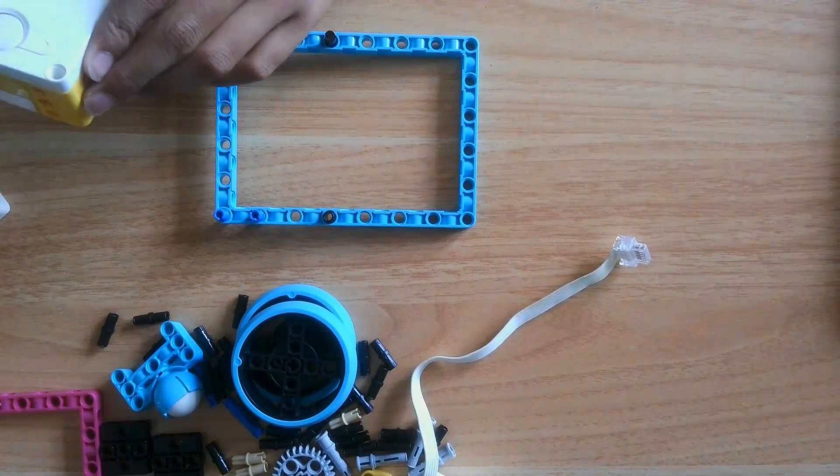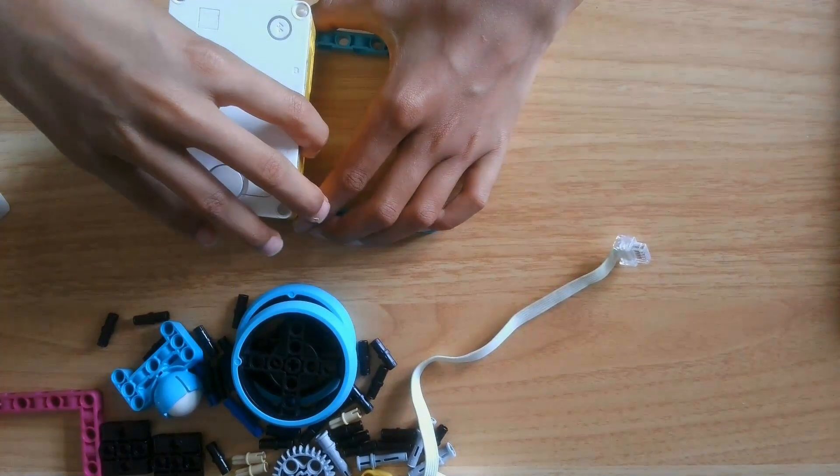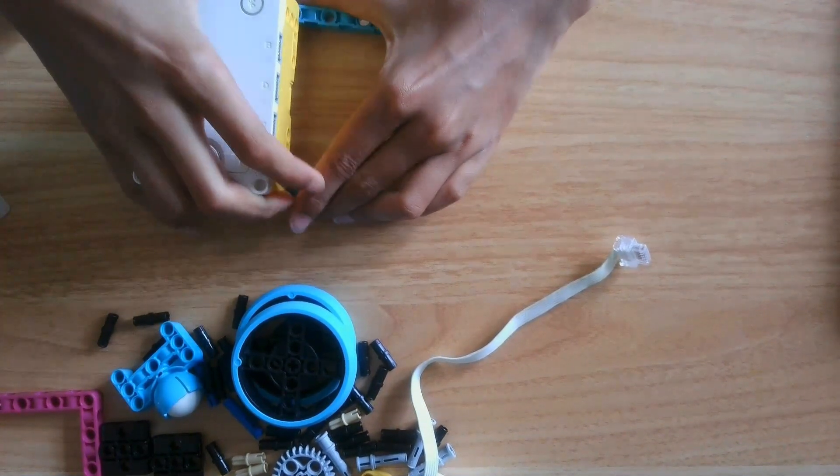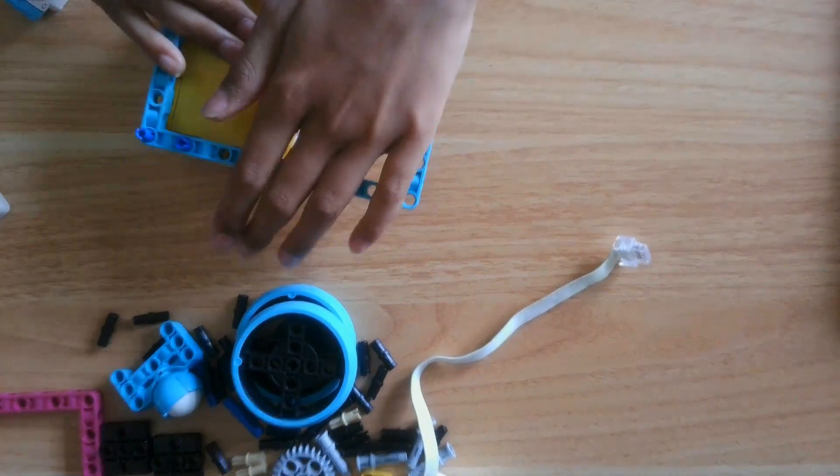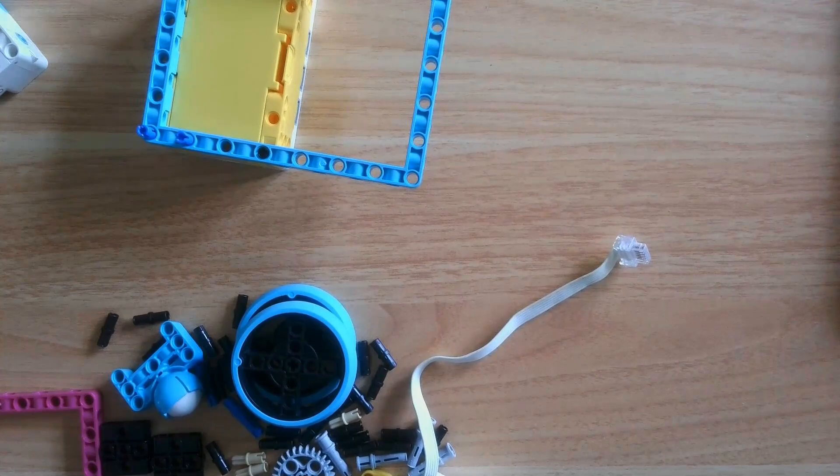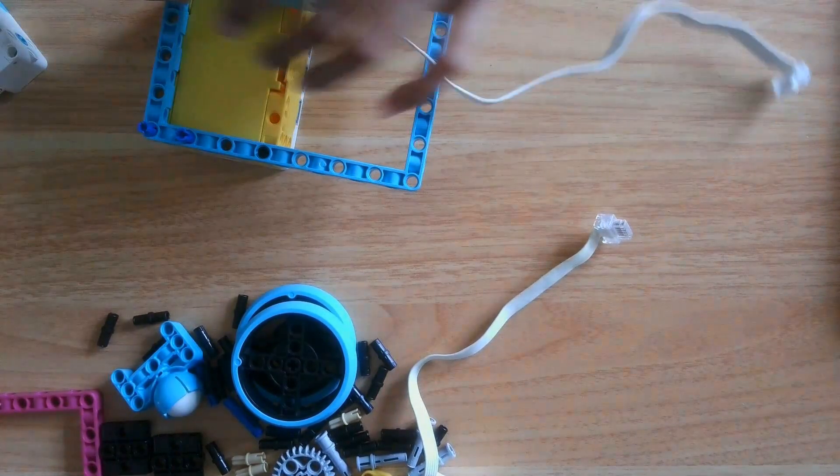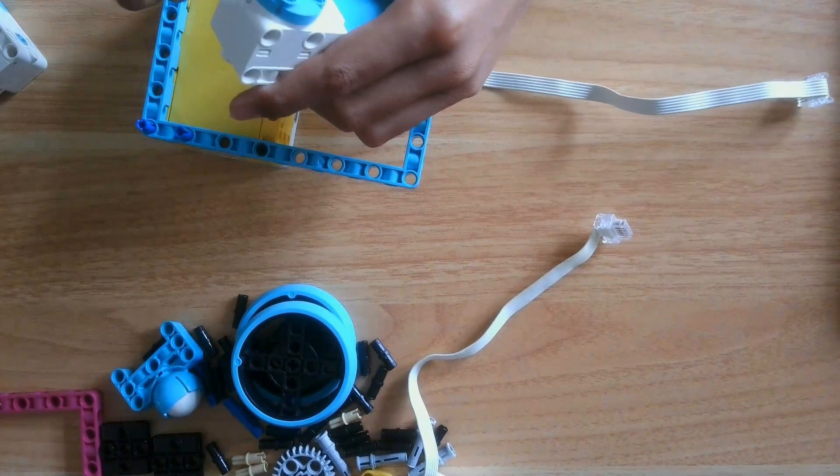Then, you want to grab two black pins and put them here and put one here on opposite ends. Now, you want to take your hub and you want to place it down like so. Then, you want to get your motors and you're going to want to get one, two more.